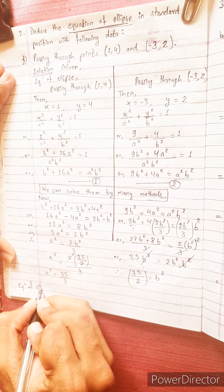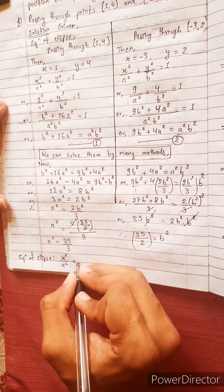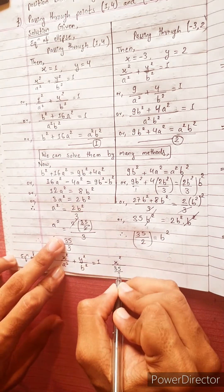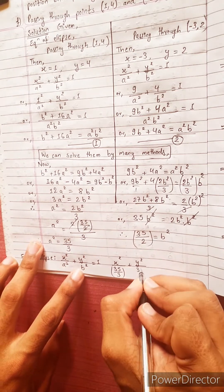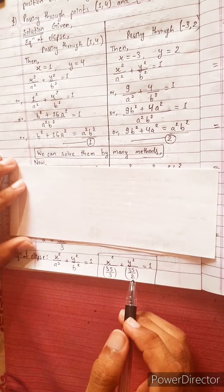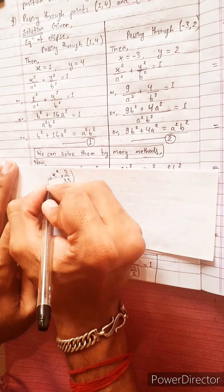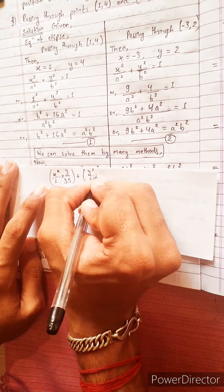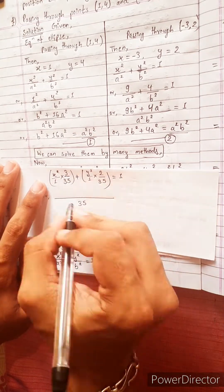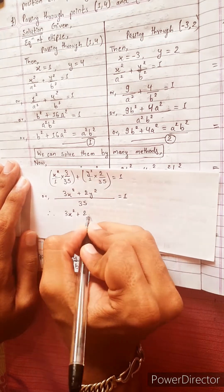Now we have the equation of ellipse: x² / a² + y² / b² = 1. Substituting a² = 35/3 and b² = 35/2: x² / (35/3) + y² / (35/2) = 1. Taking reciprocals: (3x²/35) + (2y²/35) = 1. Therefore, 3x² + 2y² = 35.